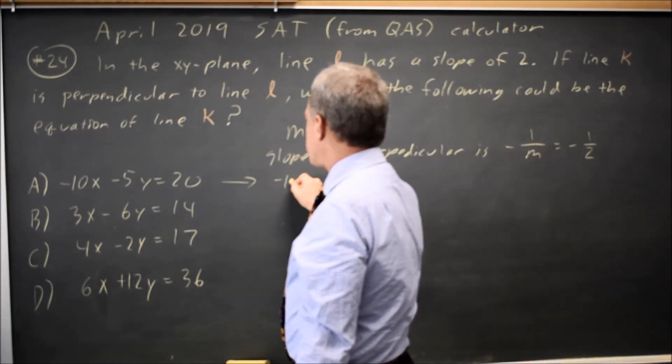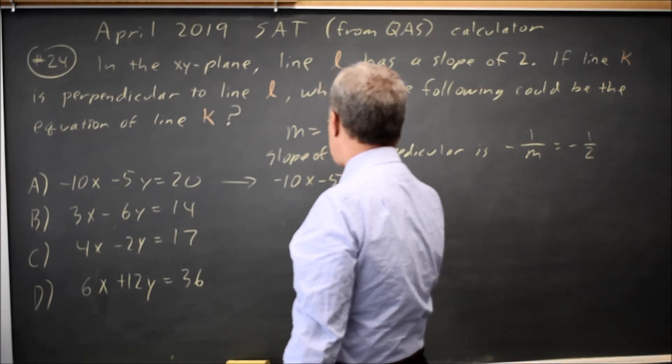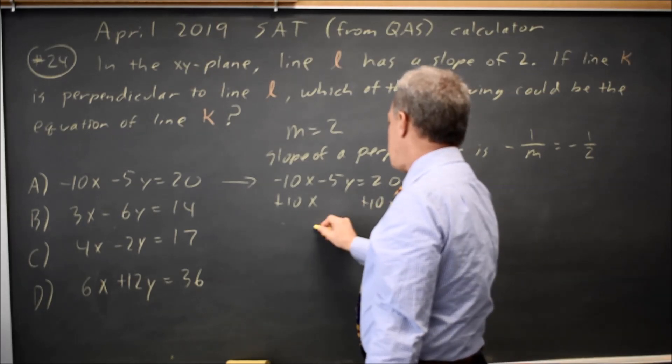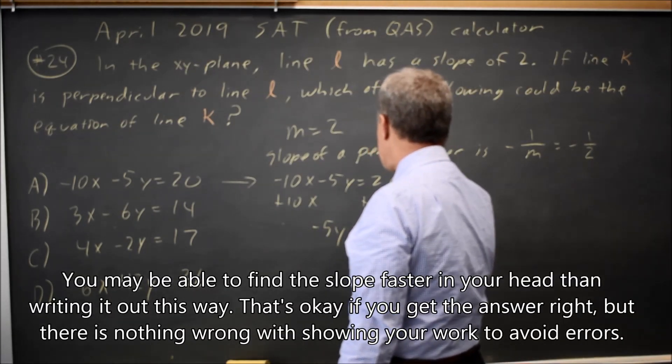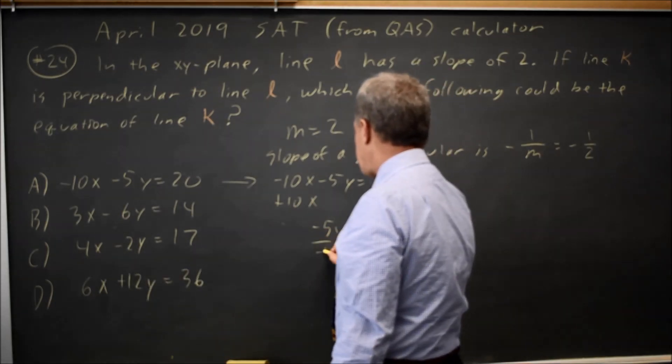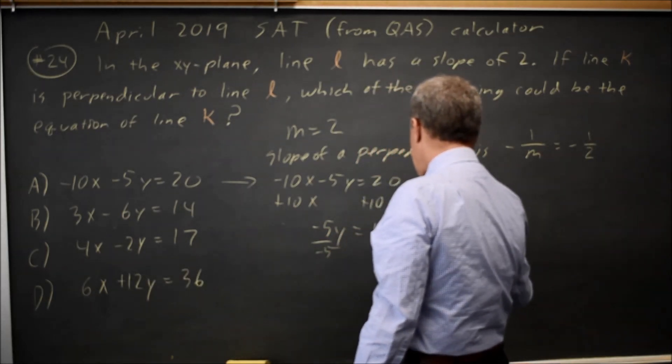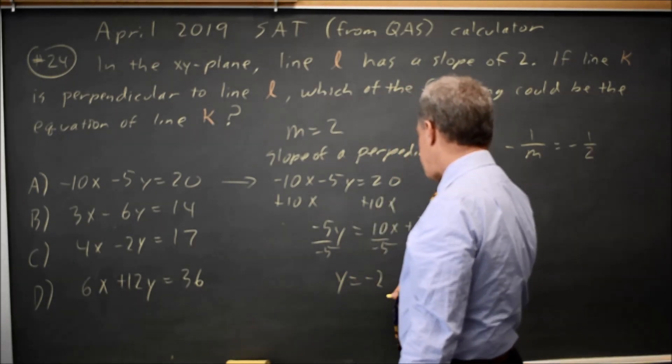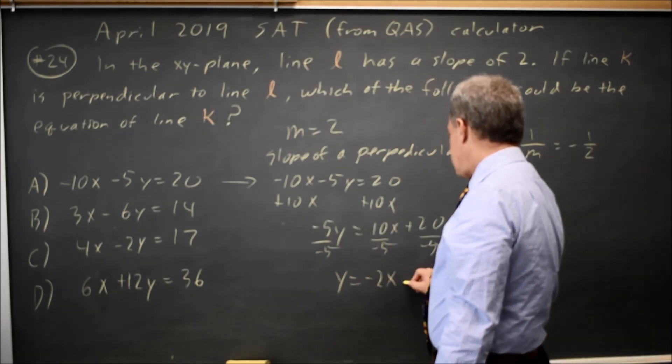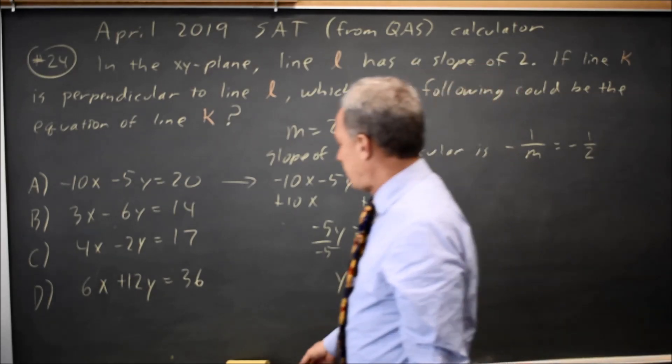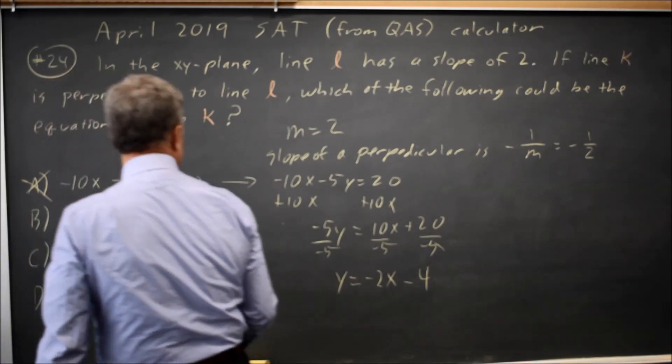If I take negative 10x minus 5y equals 20, add 10x to both sides, negative 5y equals 10x plus 20. Divide by negative 5, y equals negative 2x minus 4. And this has slope negative 2, not negative 1 half. So choice A is not correct.